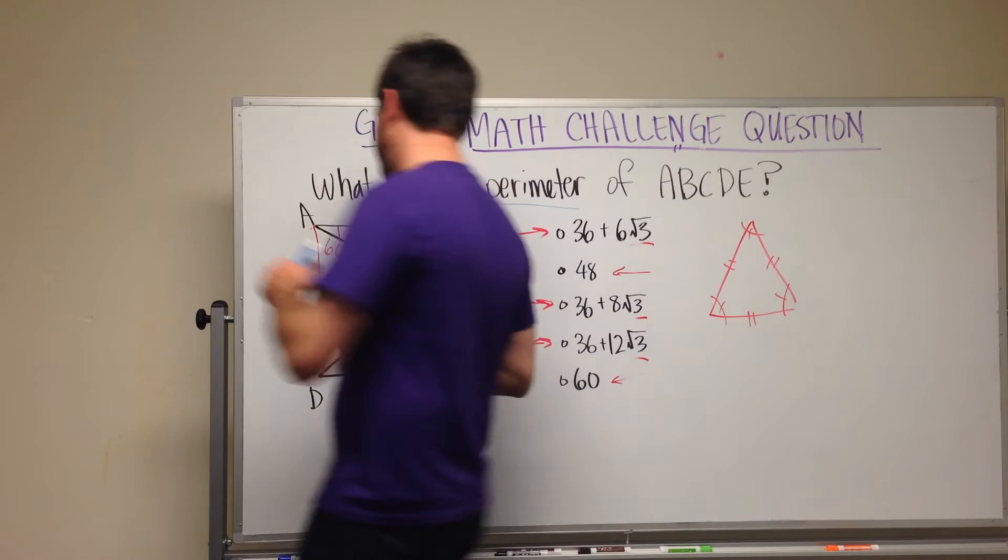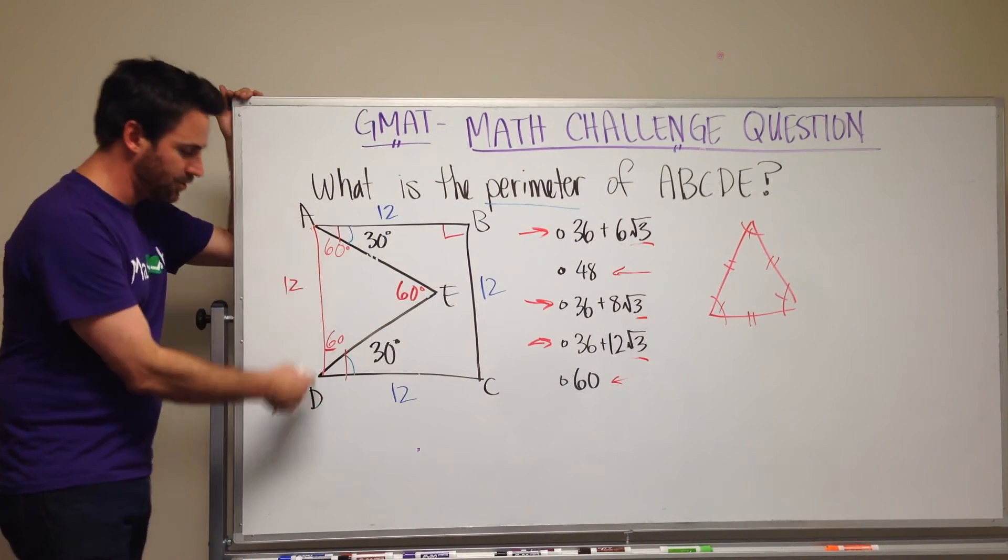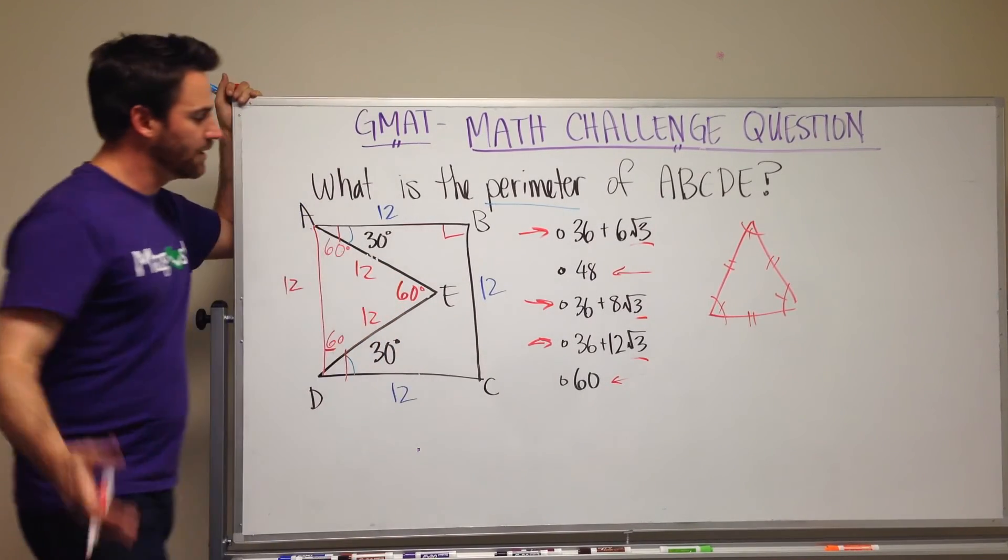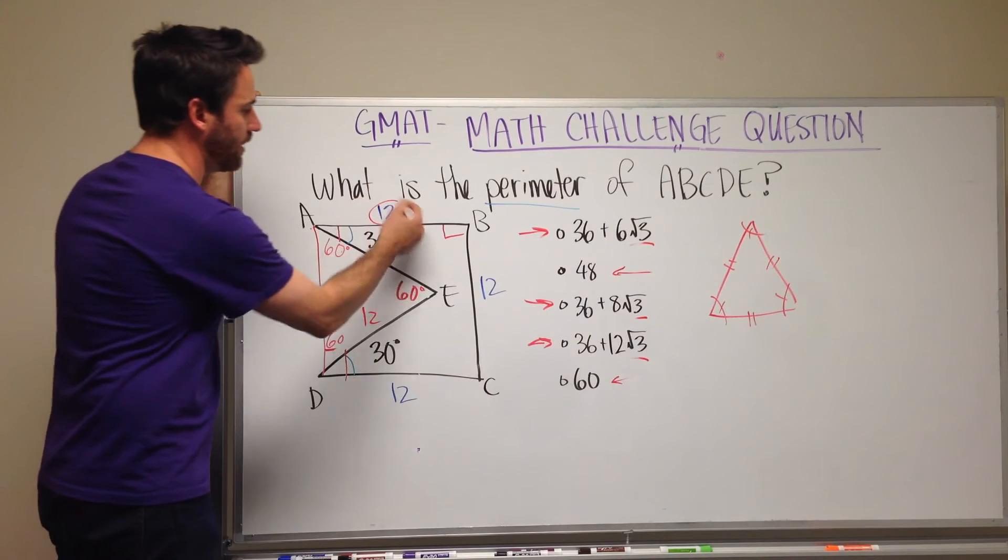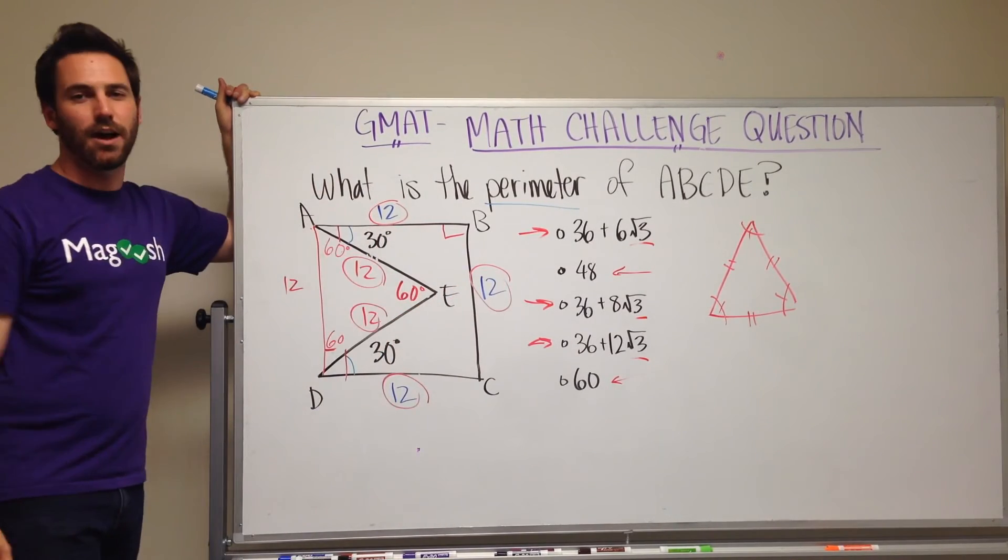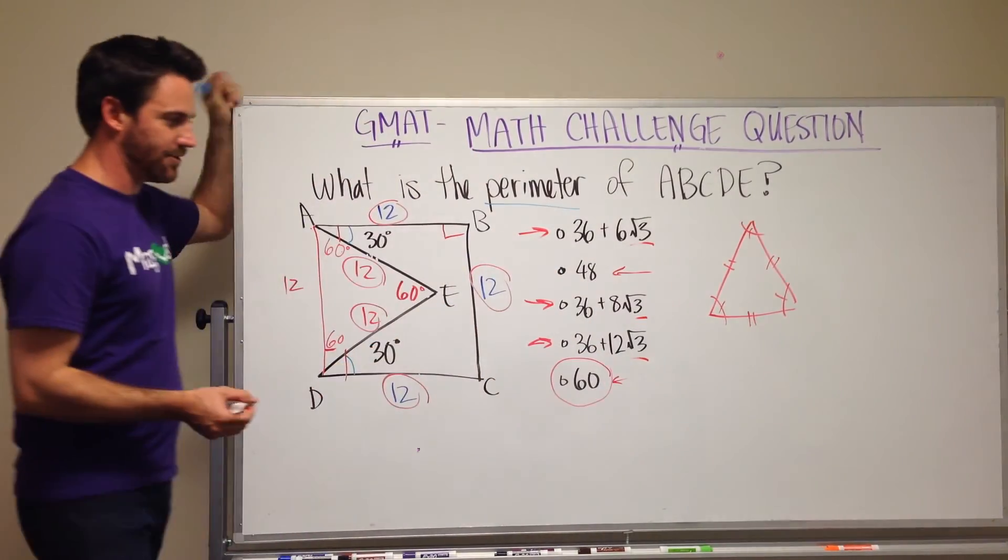So coming back over here, I now know that the length of this side and this side is equal to this side. So this is 12 and this is 12. So I have 1, 2, 3, 4, 5 twelfths. 5 times 12 is 60, and that will be our answer.